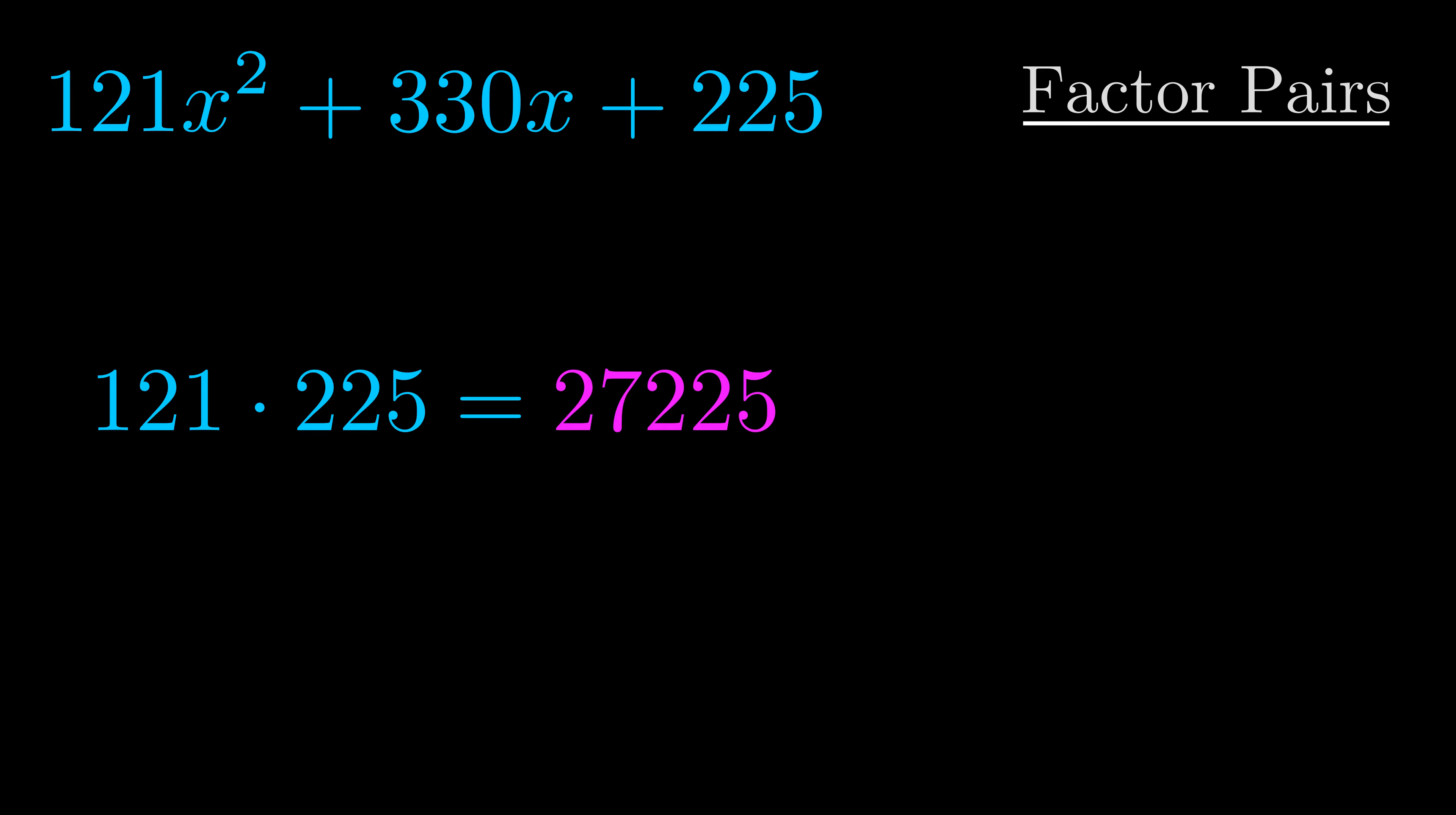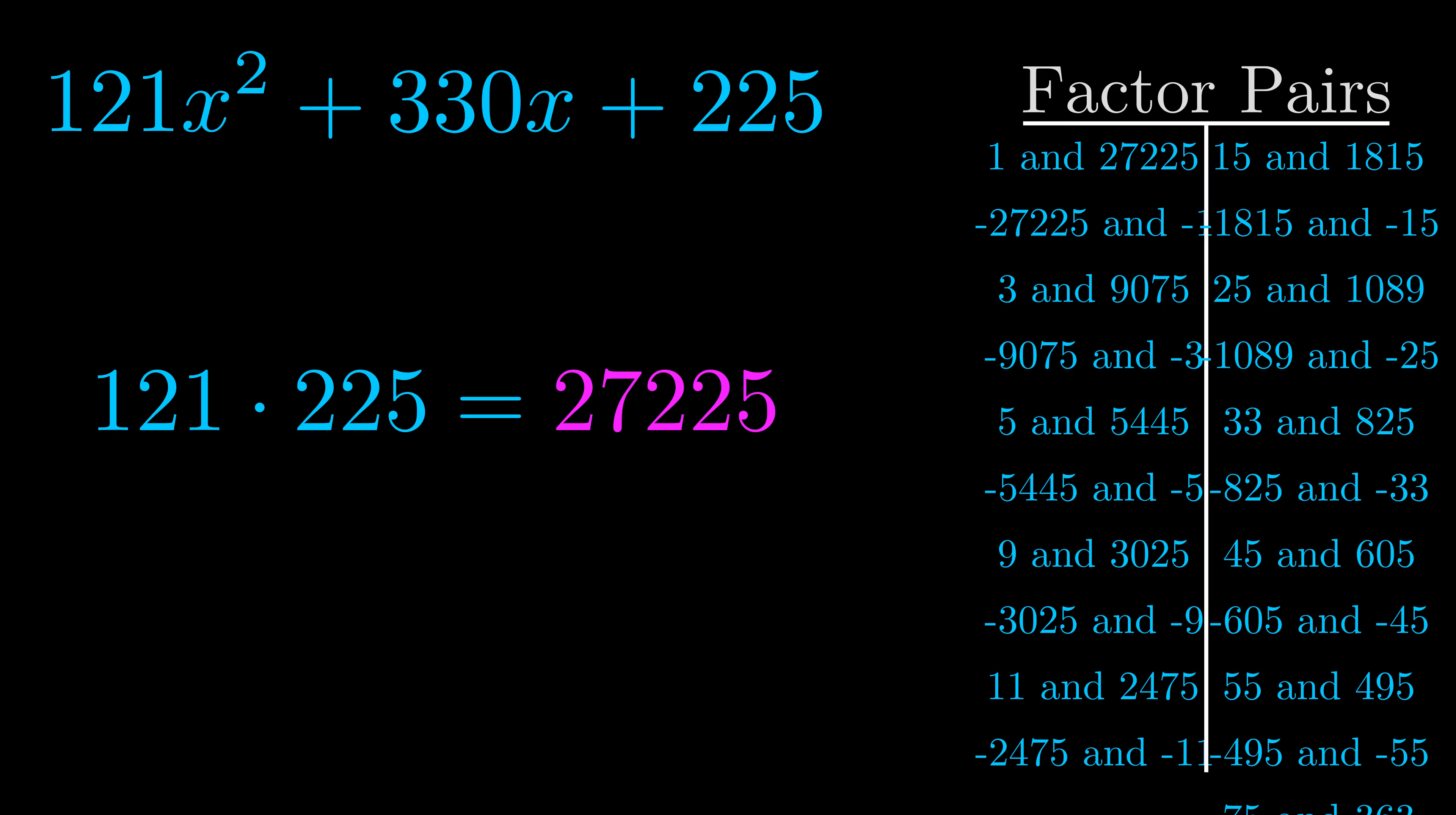Okay, here's what I came up with. Now once you have these factor pairs, the goal is to find which of these pairs adds to the b value.